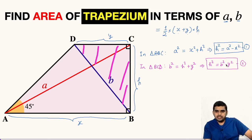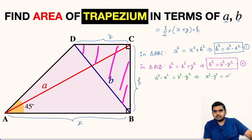We can equate equations 1 and 2. From here we get a² − X² = b² − Y². Rearranging, X² − Y² = a² − b², which we can express as (X + Y)(X − Y) = a² − b². Let this be equation number 3.